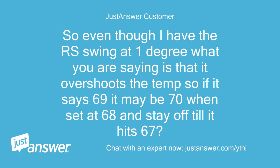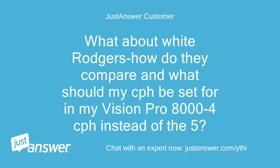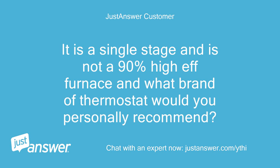So even though I have the RS swing at 1 degree, what you are saying is that it overshoots the temp — so if it says 69, it may be 70 when set at 68, and stay off till it hits 67? What about White Rogers — how do they compare, and what should my CPH be set for in my Vision Pro 8000, to 4 CPH instead of 5? It is a single stage and is not a 90% high-efficiency furnace. What brand of thermostat would you personally recommend?